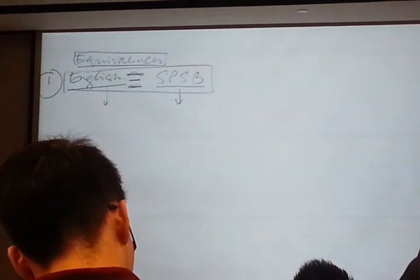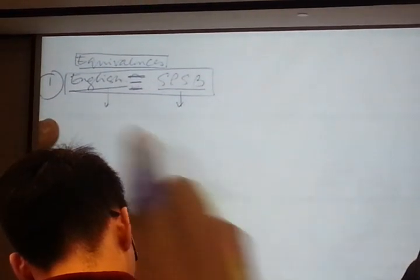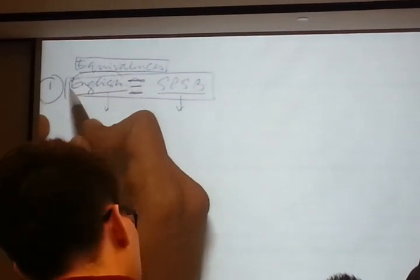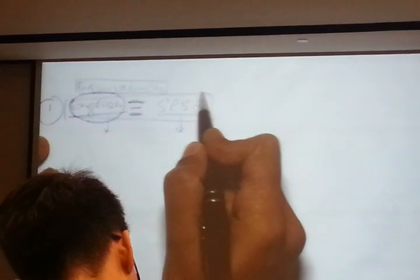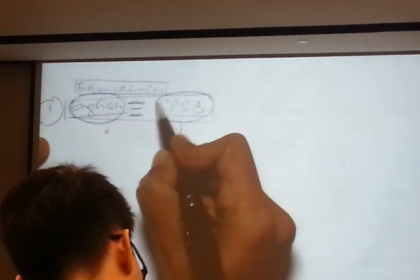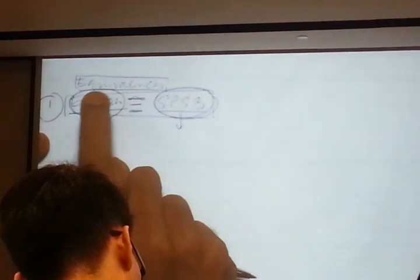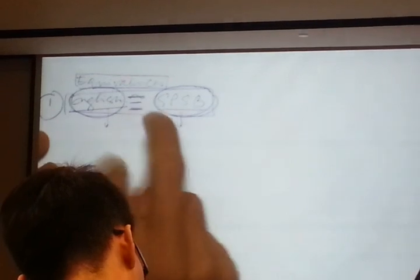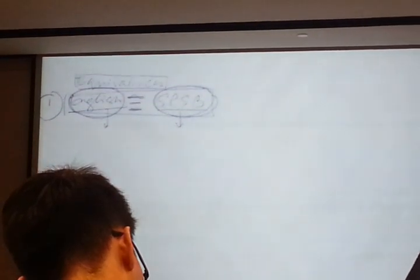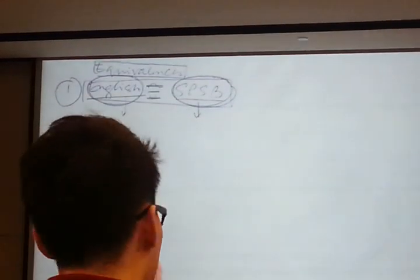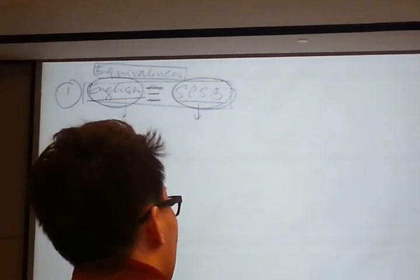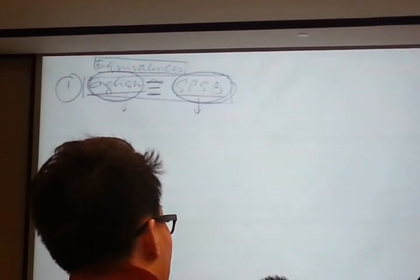They are equivalent, as I will show you. I am going to claim that the equilibrium strategy a bidder has in the English auction is identical to the equilibrium strategy a bidder has in the second-price sealed bid auction. If I can show you that, then I am showing you that whatever will happen in one auction will also happen in the other. So I have to show you that equilibrium strategies are the same in the English and the second-price sealed bid auction. You have to know the proof.